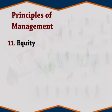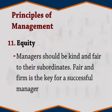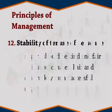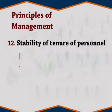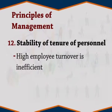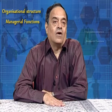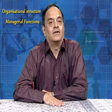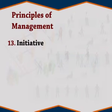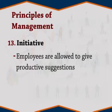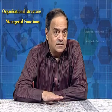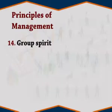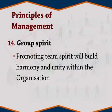Eleven: equity. Managers should be kind and fair to their subordinates. Fair and firm is the key for a successful manager. Twelve: stability of tenure of personnel. High employee turnover is inefficient. Management should provide orderly personnel planning and ensure that replacements are available to fill vacancies. Thirteen: initiative — employees are allowed to give productive solutions. Do not discourage the juniors from giving new ideas. Fourteen: group spirit. Promoting team spirit will build harmony and unity within the organization.